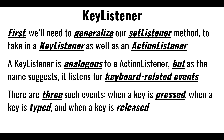To implement this, we're going to introduce an additional listener. Not only are we going to handle clicking a button as an action, we also want to listen to keystrokes. Keystrokes have a whole family of event types — we can press a key, we can let go of a key, and the combination of those two is what we refer to as typing a key. So there are three events: pressing, typing, and releasing a key. We'd like to handle these very much like we're handling action listeners right now.